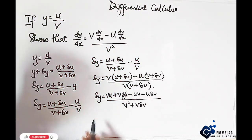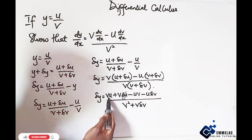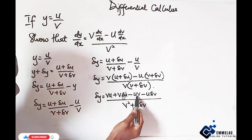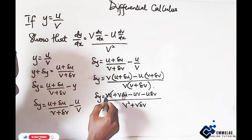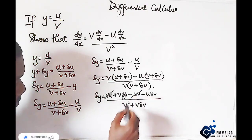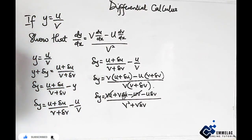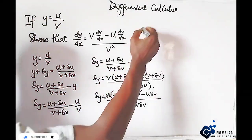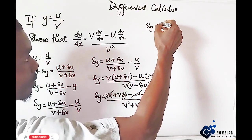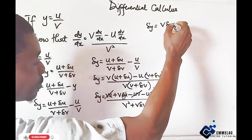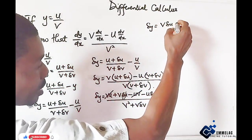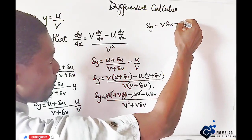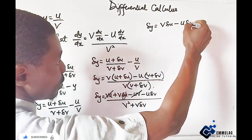Now looking at this, we can see we have common terms that can subtract each other - vu. So here we have that change in y equals v change in u then minus u change in v.